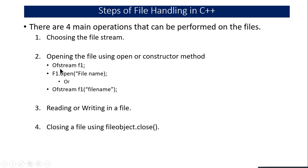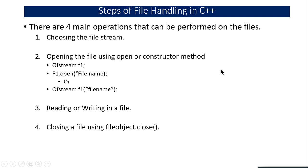For example, with ofstream f1 you create an object for write purpose, then you can use f1.open() and pass the file name in double quotes. Or you can combine these two lines using the constructor method, where the file name is mentioned alongside the object name. Once you open the file, you can read or write data using functions like fgetc, fputs, fread, and fwrite. Once reading or writing is done, you must close the file using the close function.